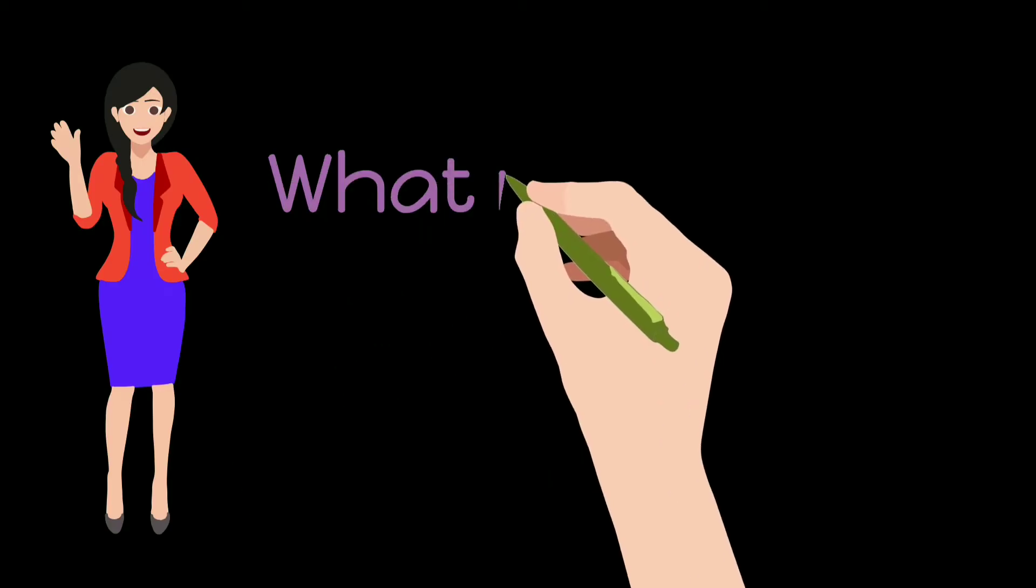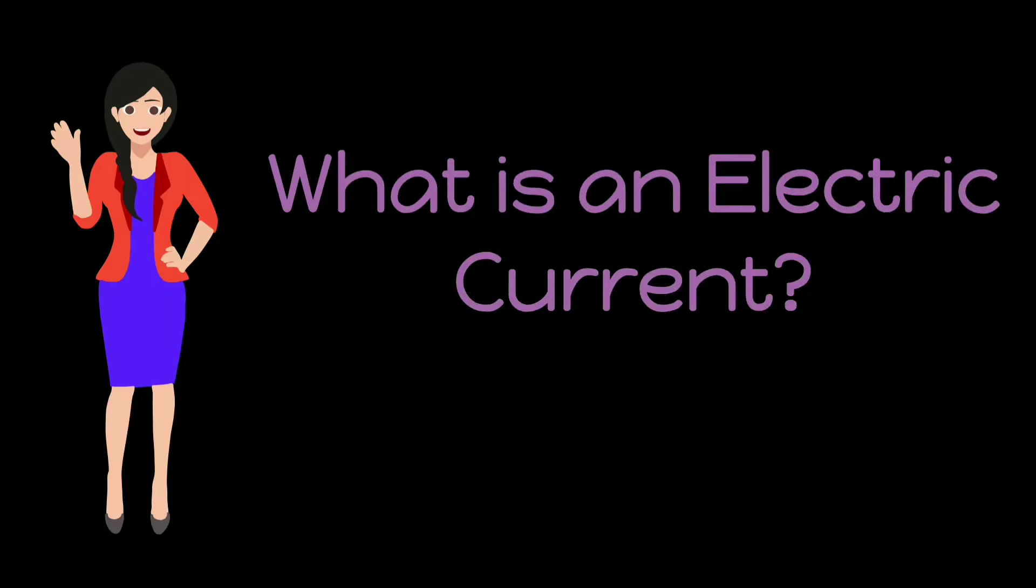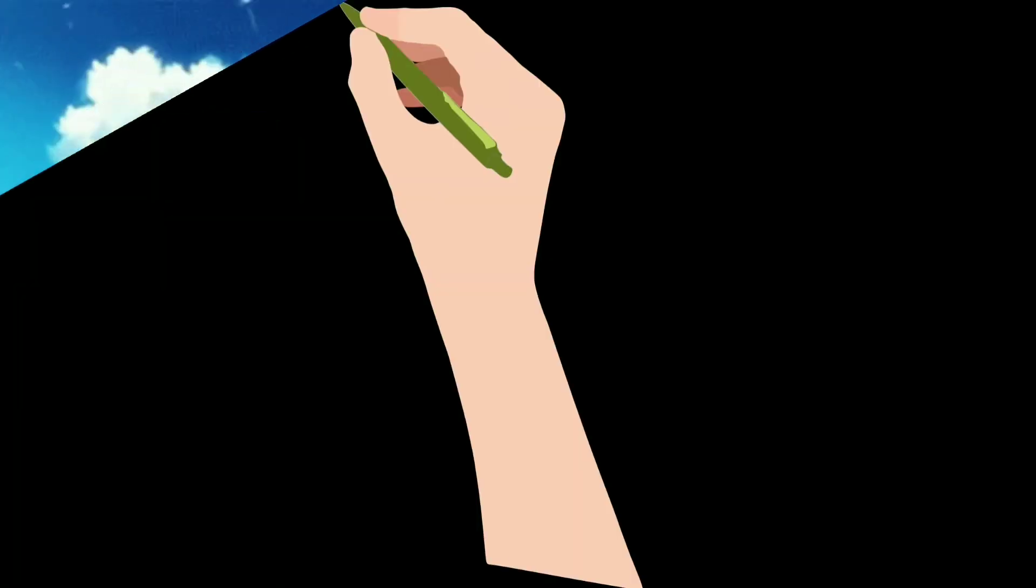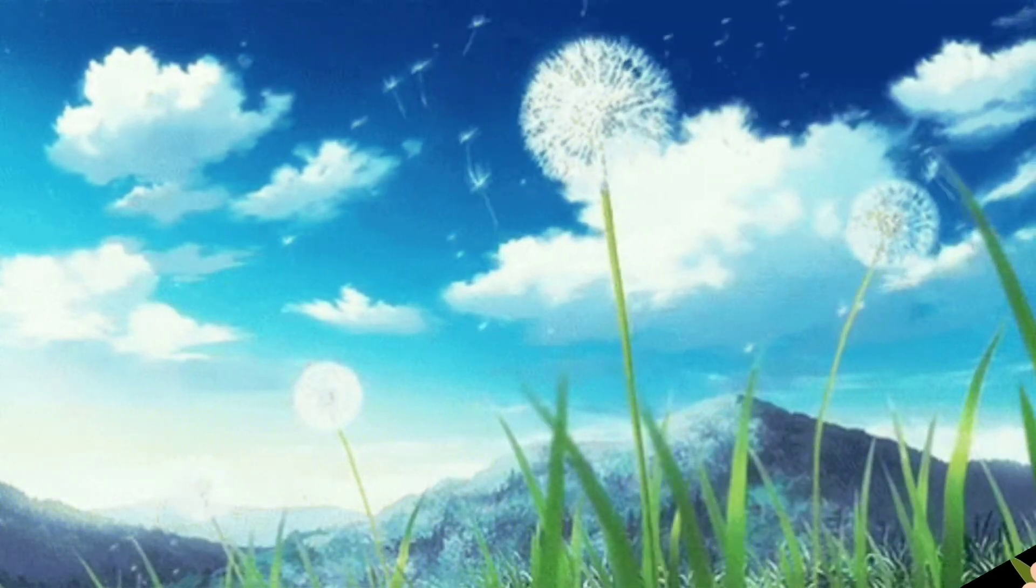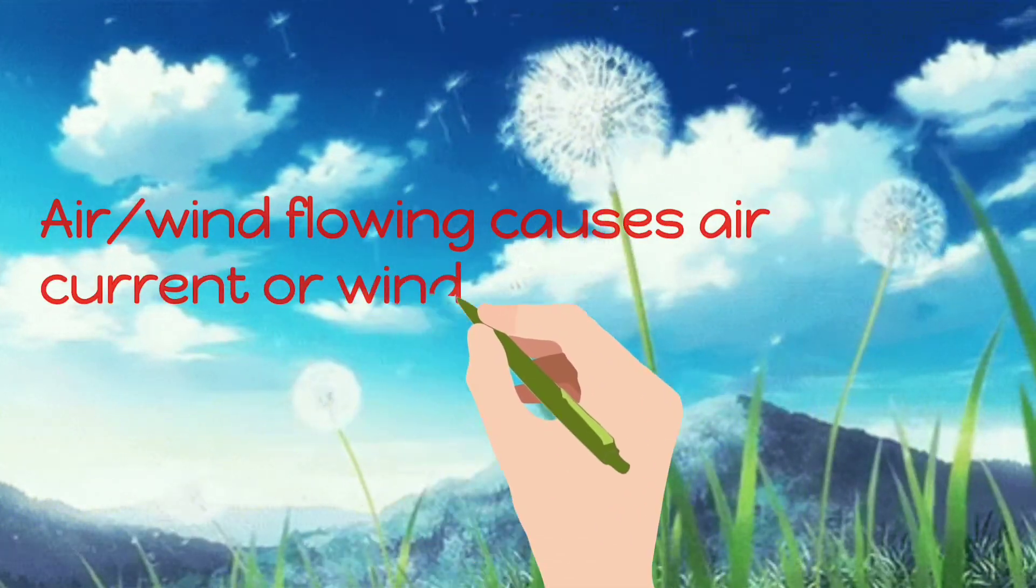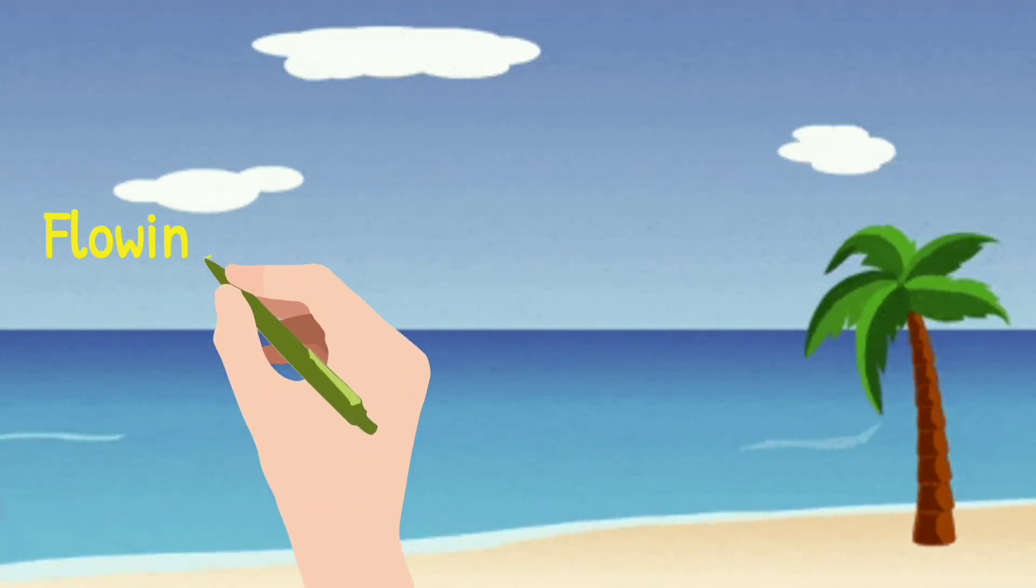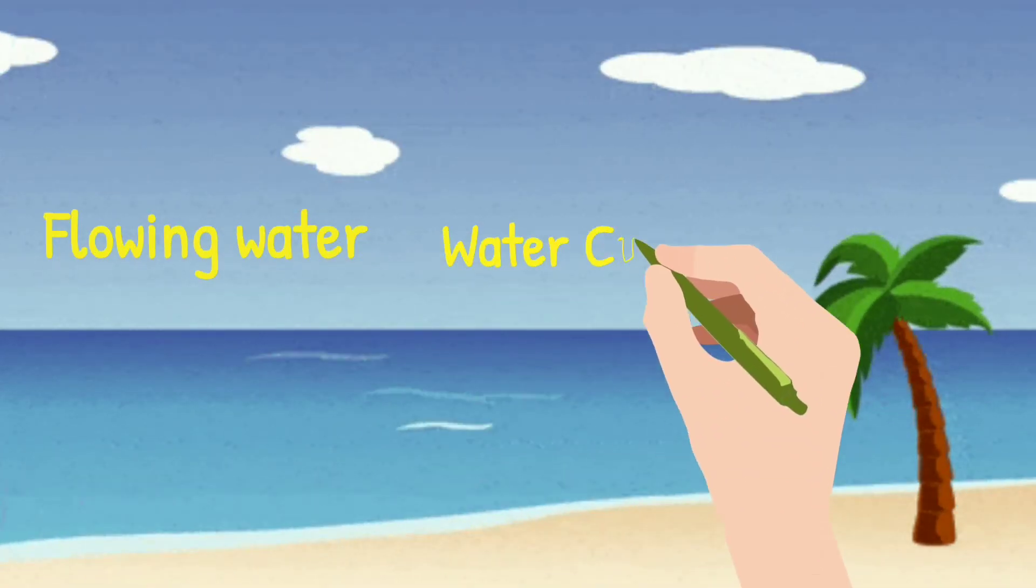What is an electric current? In our previous video, we have seen importance of electricity. So how will you define electricity or what is an electric current? To understand this, let us learn more about current first. Air or wind flowing causes air or wind current. In the same way, flowing water causes water current.